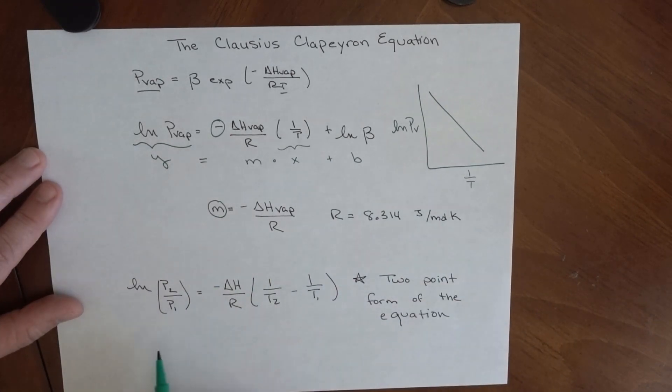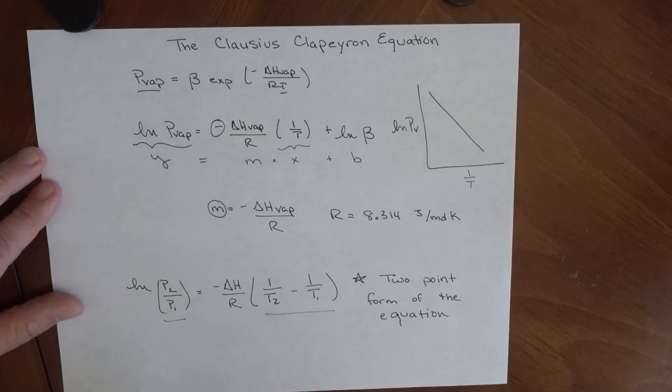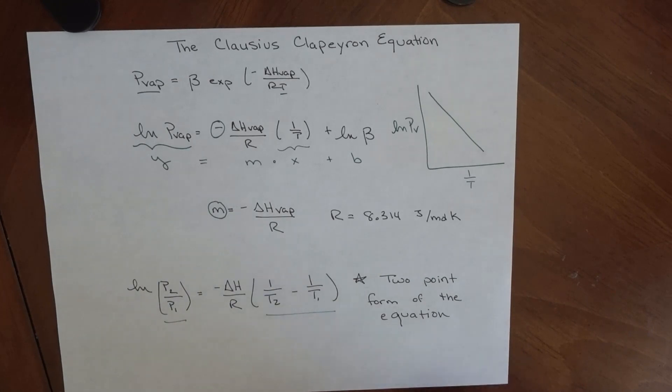If I only know two points, that is, two pressures and two temperatures, I can arrive at the same thing. Or if I know the enthalpy of vaporization and one pressure and temperature, I can get another at a different temperature. So it's a really cool thing for us to be able to use. Let's see an example.